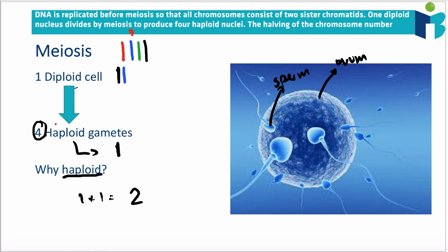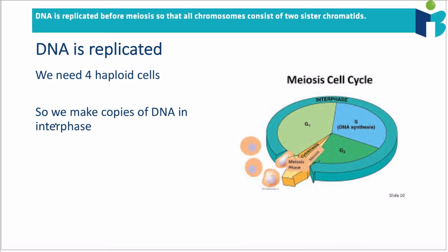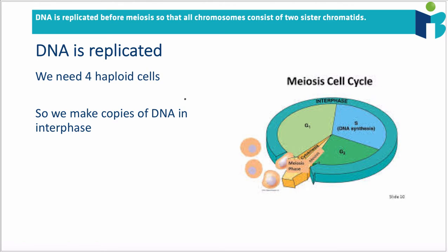Before we go into the actual mechanisms of meiosis, it's important to mention that before meiosis begins, we have to replicate our DNA. We have 23 chromosome pairs — 46 in total — and we want to make four haploid cells. Since we only have two versions of every chromosome in a normal cell, we can't make four haploid cells unless we replicate the genetic material first. This gives us four of every chromosome, so we can make four haploid cells by giving one to each. DNA is replicated in interphase, specifically in the S phase.